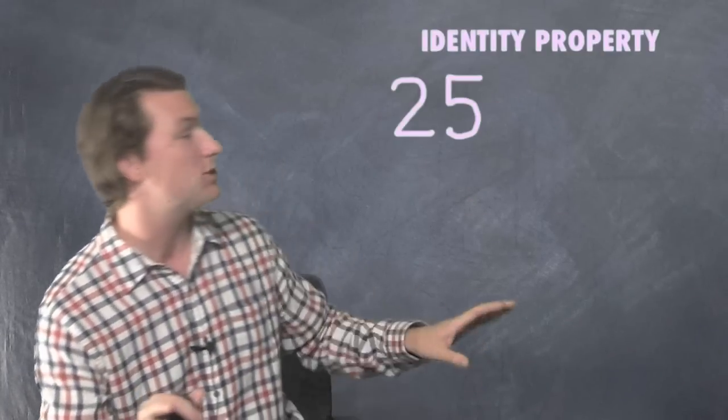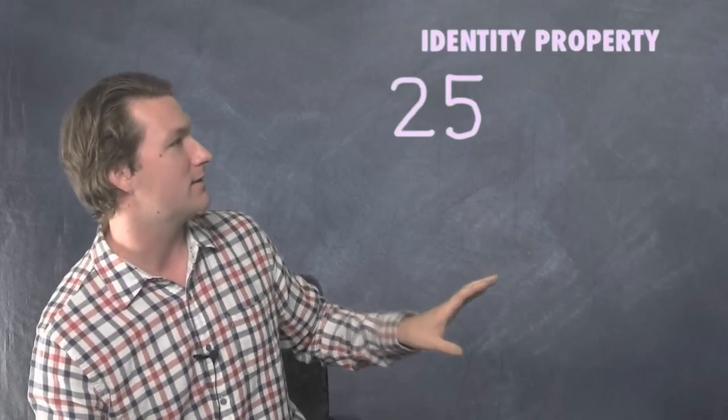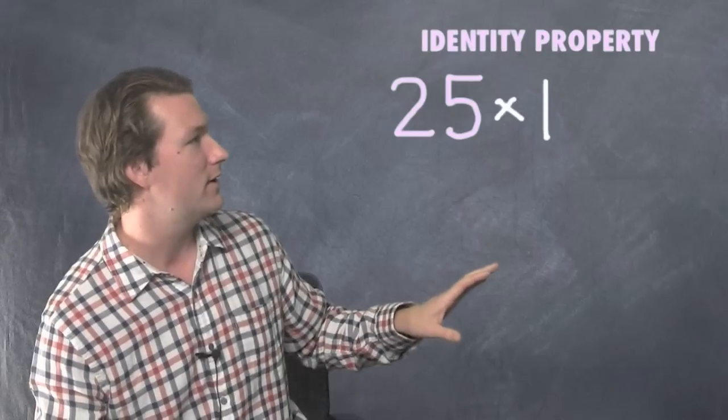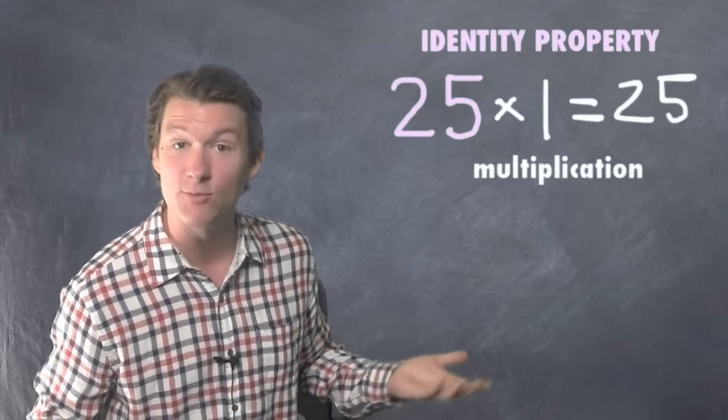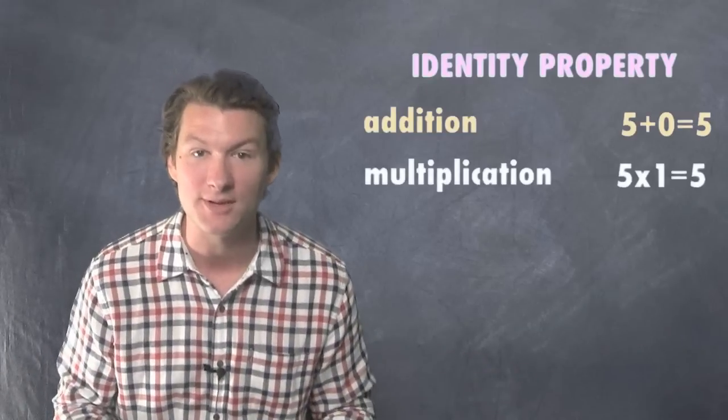Let's do the multiplication one. Let's say, all right, we got 25. What do you got to multiply here for it to stay 25? Well, multiply it by one because 25 times one is 25. That's the identity property of multiplication. That's how the identity properties work.